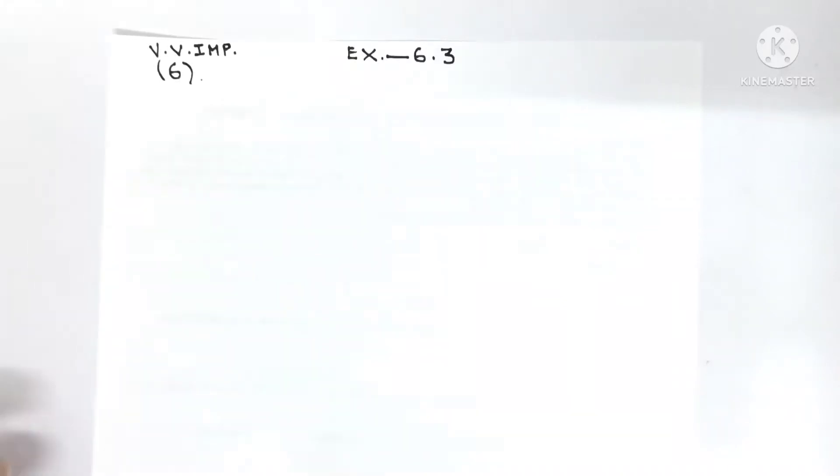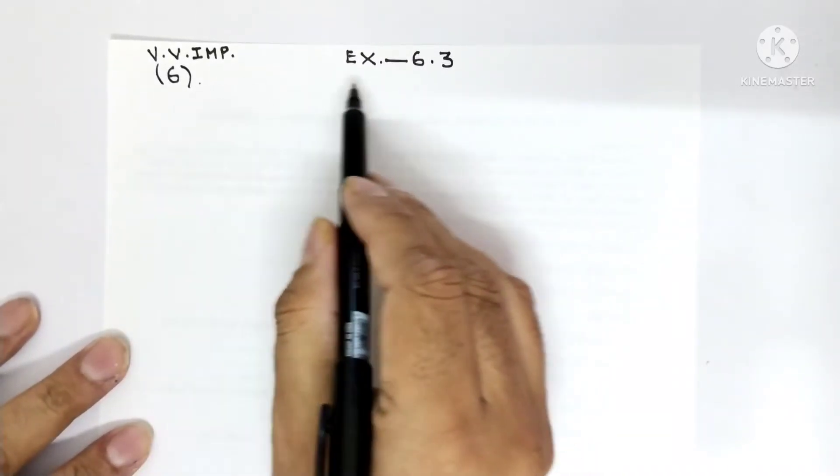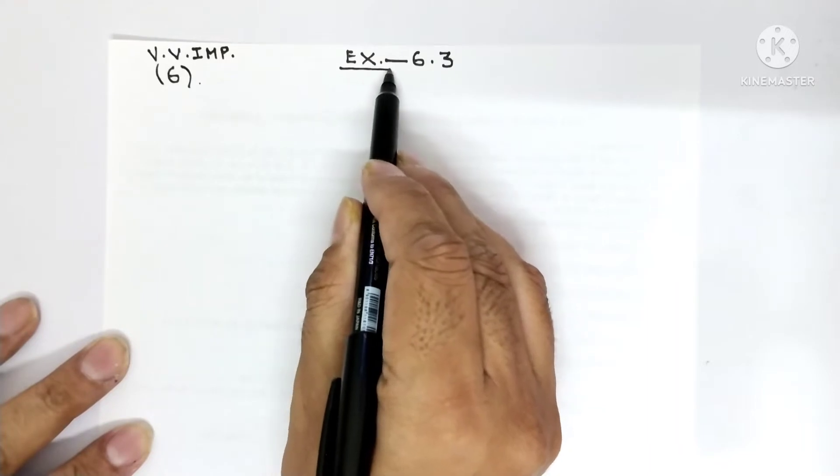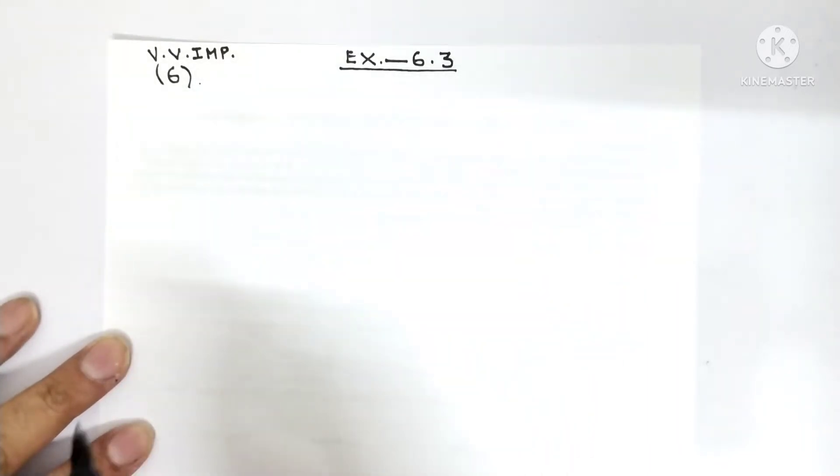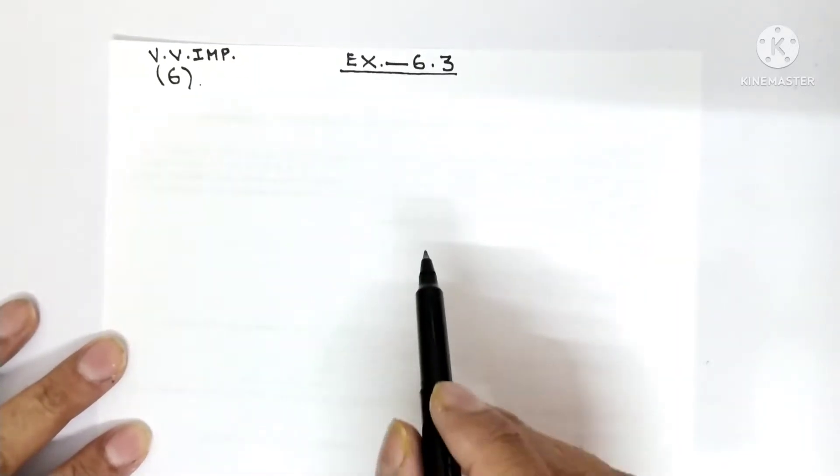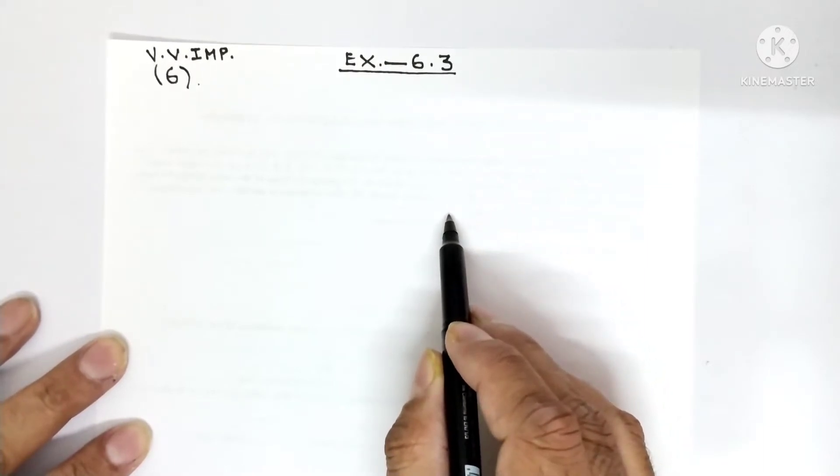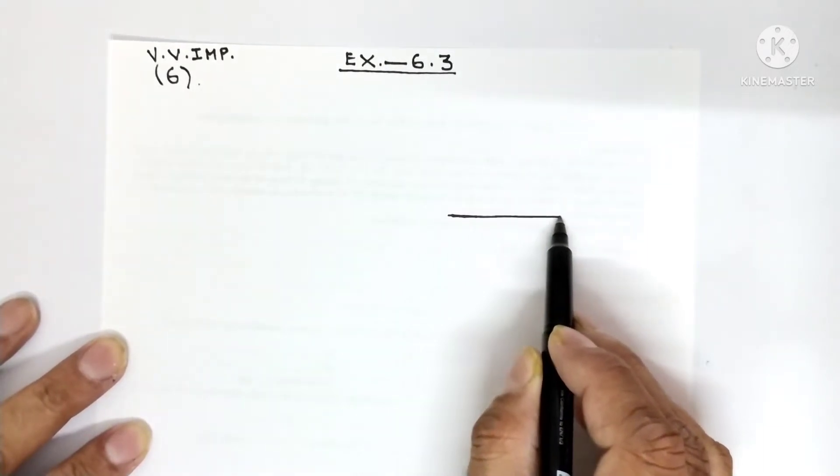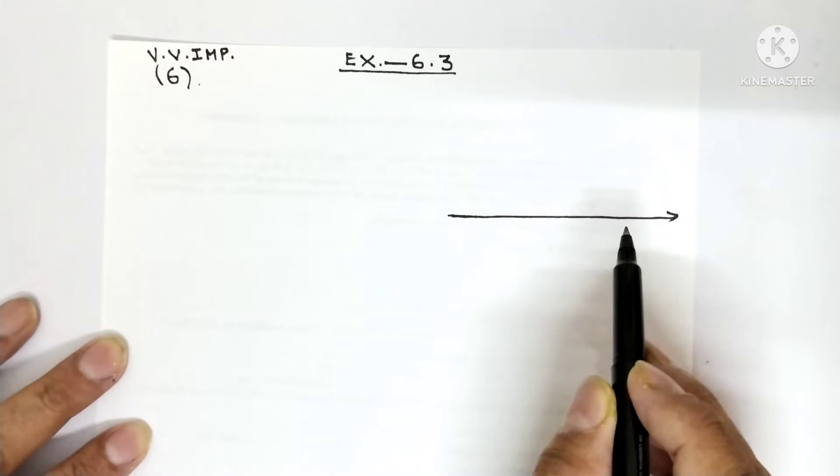Hello everyone! I am doing question number 6, exercise 6.3, Chapter Lines and Angles. This is the most important question of the exercise and most of the times it comes in the exam, so see it carefully.